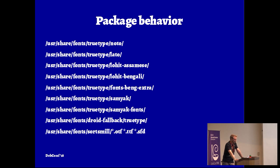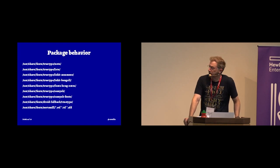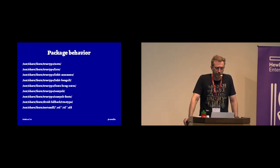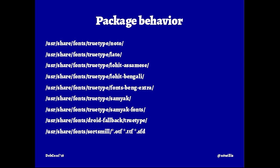Same is true with install paths. People install to /usr/share/fonts and then the file type, but it doesn't always work that way. Noto at the top is a mega-family from Google. Lato is one particular small family by the same person. Lohit splits Bengali and Assamese into two directories even though it's the same writing system. BengExtra is not a meta package — it's a set of unrelated fonts that just happen to support Bengali. Semiaks ends up in two different places. Droid-fallback doesn't even end up under the same directories as everything else. SortsMill has a dump-everything-in-the-same-place approach, including some OTFs, some TTFs, and some SFDs — FontForge source files — all ending up in /usr/share/fonts.